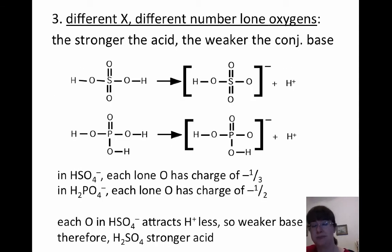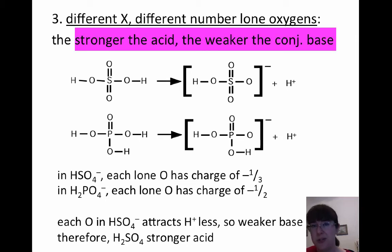So here's the last one. You can have different central atoms and different number of lone oxygens. Just when you thought it was simple. So here's the thing. Keep in mind, the stronger the acid is, the weaker the conjugate base is.